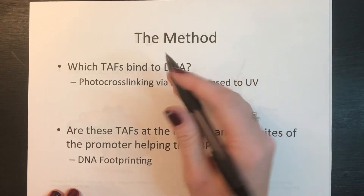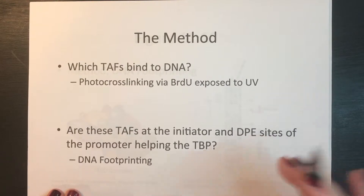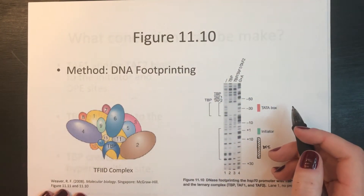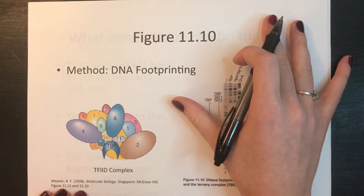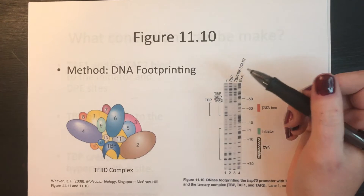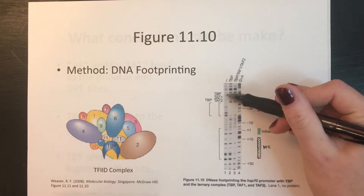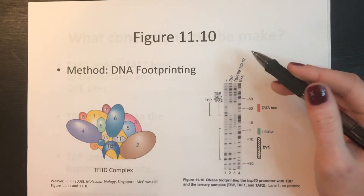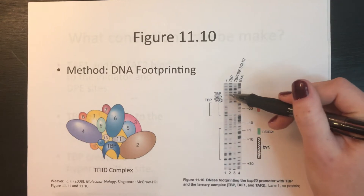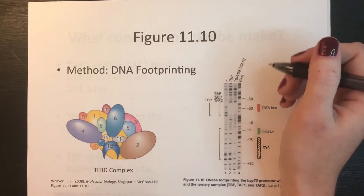Now that we know it is TAF1 and TAF2 that bind to the promoter region, the next question is: where exactly are they binding? Is it at the initiator and DPE sites or somewhere else? That is what figure 11.10 addresses, using the DNA footprinting method. Footprinting involves allowing proteins to bind to radiolabeled DNA, then cleaving the DNA with DNase or another cleaving agent. This produces a random ladder-like distribution on a gel, and the same TATA box, initiator, and DPE promoter sequence is used again.